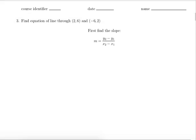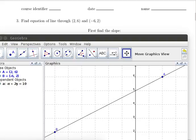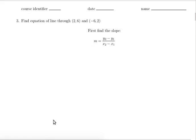First find the slope. Remember the equation for the slope is y2 minus y1 divided by x2 minus x1, where x2, y2 is the ending point and x1, y1 is the beginning point. In our case we're going to think of 2, 6 as the ending point and the minus 6, 2 as the beginning point.